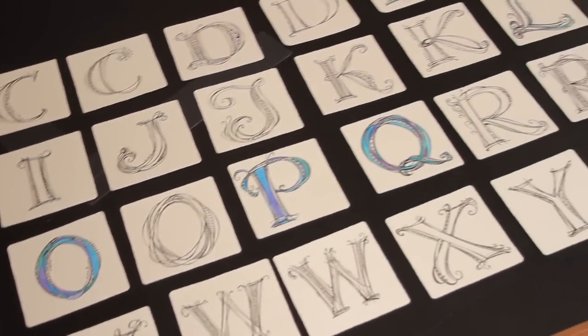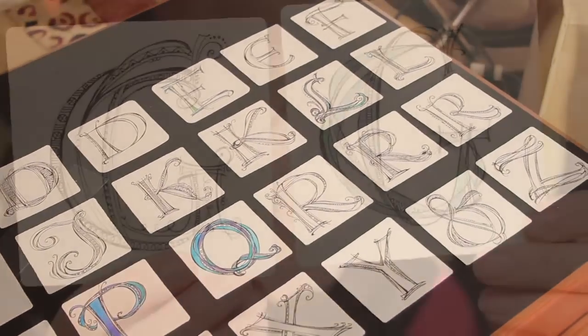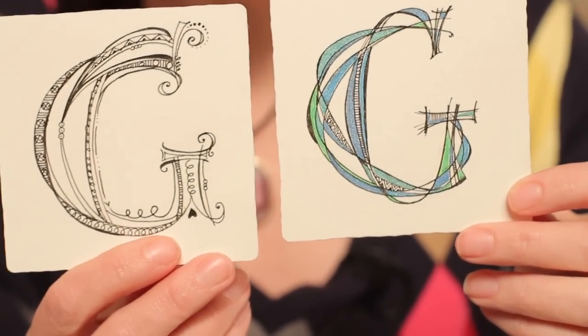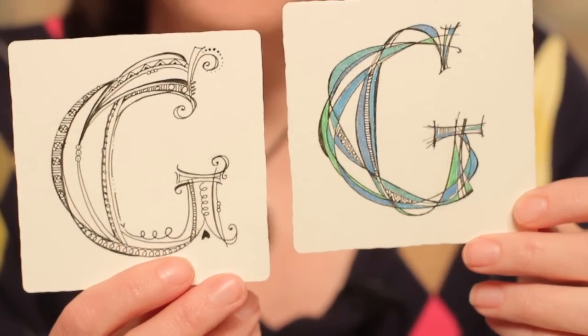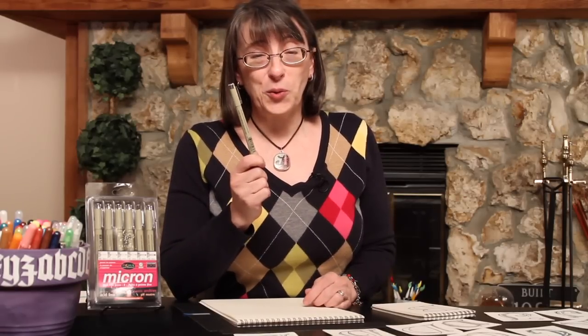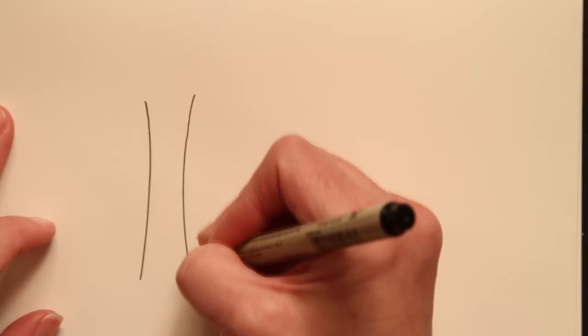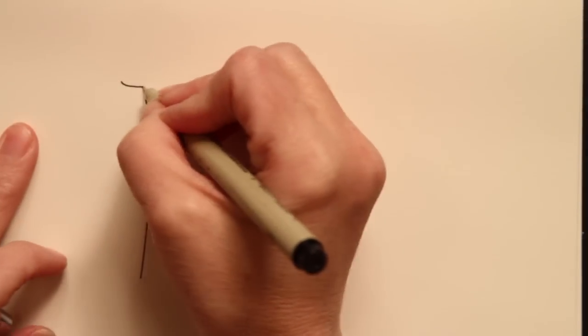Every time I do a letter it turns out differently. We're going to look both at some black and white letters and then we're also going to take a look at how to color them. Start by picking up my favorite tool which is a micron. Always work on good quality paper, it makes a huge difference. I'm working on Strathmore 400 series drawing paper and we're going to start by doing the outline of the letter.